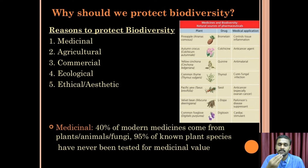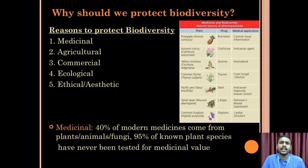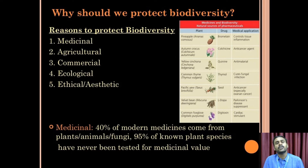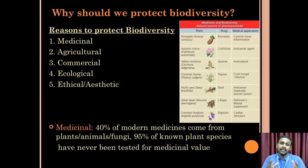Number two is agriculture — we can use biodiversity in agriculture. Number three is commercial value — it's a product we can use, we can build businesses and trade. These are the benefits when we are living in this world. We can also create new biodiversity. It is also ethical and aesthetical.